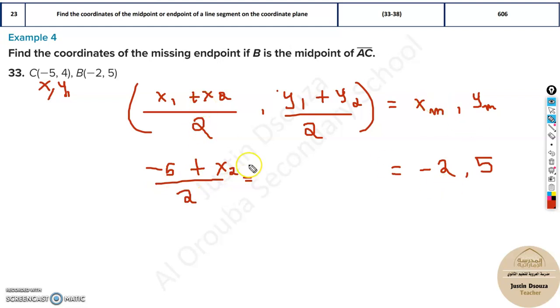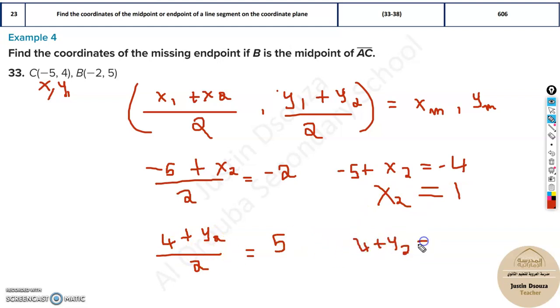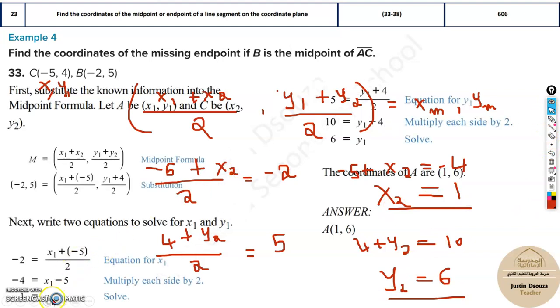Even the second thing, the y value is known. 4 is known, plus y2 divided by 2 equals the midpoint of y, that is 5. So now if you solve this, you will get the answer. Take this 2 to the other side. It will be minus 5 plus x2 equals minus 4, and x2 will be 1. Over here, 4 plus y2 equals 10, and y2 equals 6. So the answer will be 1 and 6. x value is 1, y value is 6.